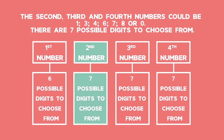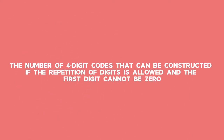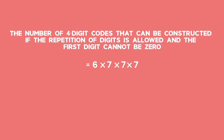The second, third and fourth numbers could be 1, 3, 4, 6, 7, 8 or 0 — there are seven possible digits to choose from. The number of four-digit codes that can be constructed if the repetition of digits is allowed and the first digit cannot be 0 is 6 times 7 times 7 times 7, which is equal to 2058.